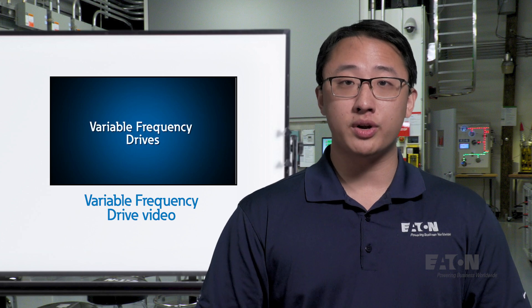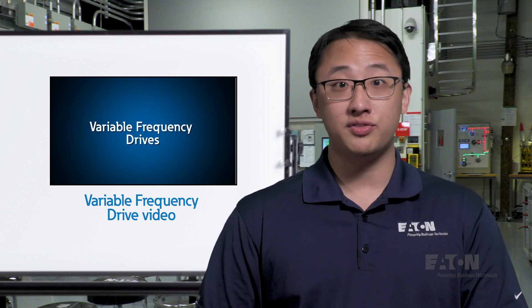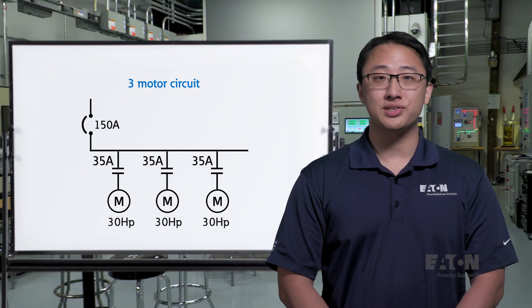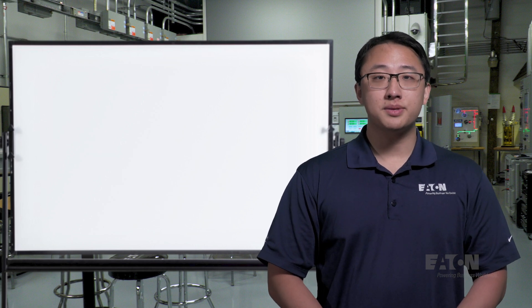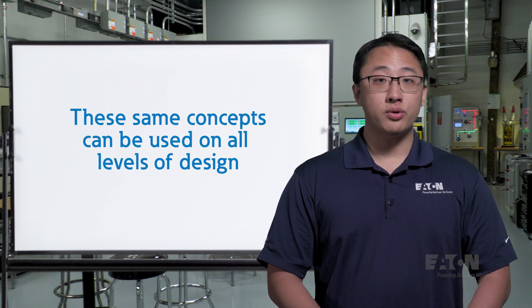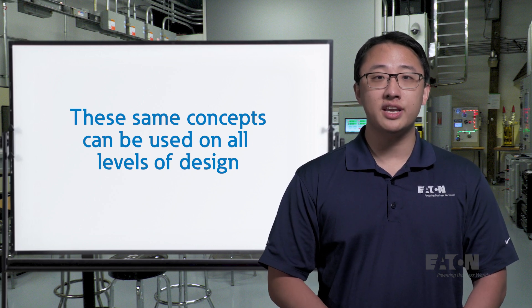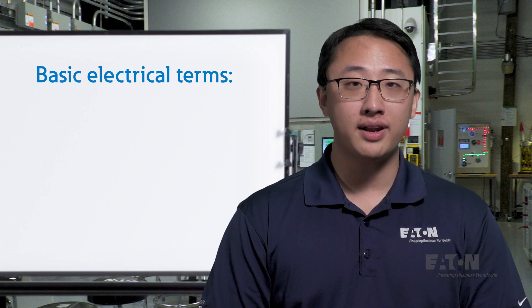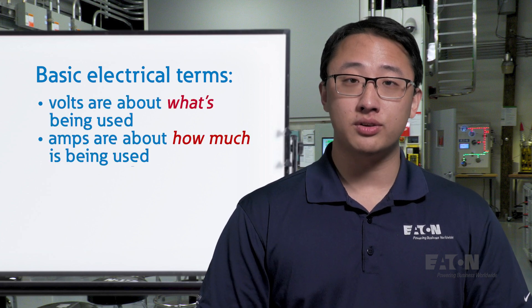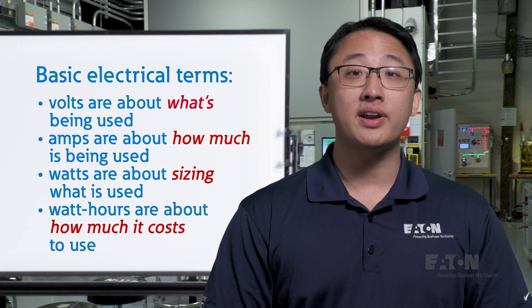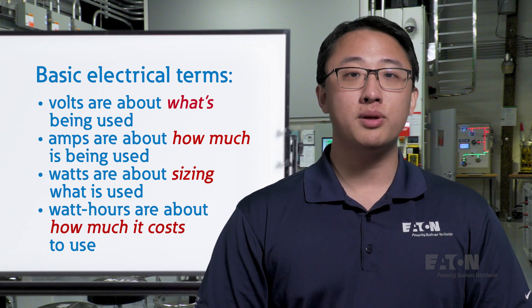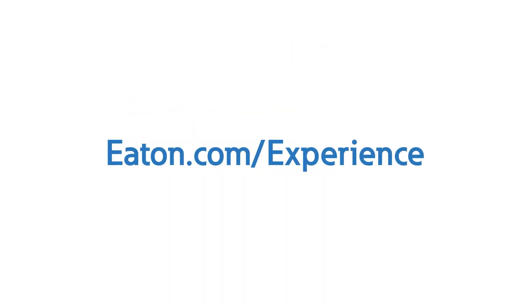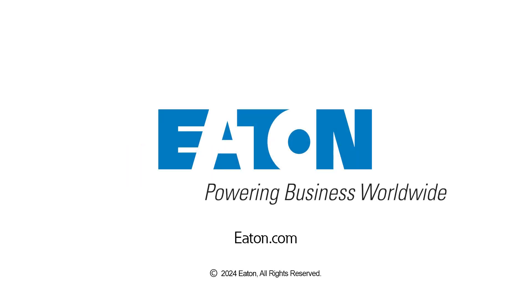One great way to save energy when running motors is by using variable frequency drives, which you can learn more about in this video. And that's our little power system — this would just be one branch of a larger system, but all the concepts extend to all levels of design. Moving forward, we can build off these design calculations and start taking into account other factors like reactive power and power factor. To summarize: volts are about what's being used, amps are about how much is being used, watts are about sizing what is used, and watt-hours are about how much it costs to use. To learn more about power systems and what goes into designing them, contact us or your local Eden representative to schedule a visit to one of Eden's Power Systems Experience Centers today.